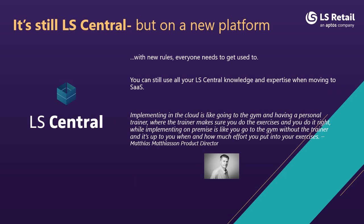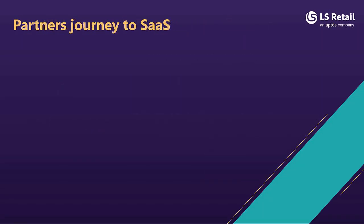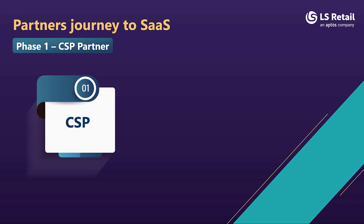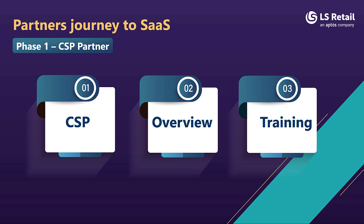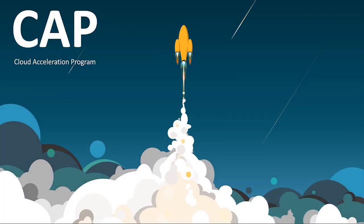Here is a reminder from our product director Mattias: it's still LS Central, but on a new platform with new rules that everyone needs to get used to. So, how are we supporting you in your SaaS journey? This can be split into two phases in terms of how we transfer knowledge and provide support and training. The journey starts with you signing the CSP addendum, at which point we will invite you to join this onboarding session. After you have finished the session, now is a good point to register for the SaaS training with LS Academy — this SaaS training certificate is a prerequisite for joining our Cloud Accelerator Program.